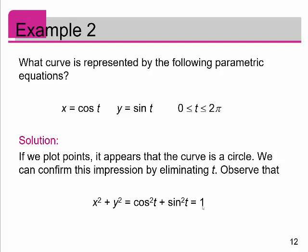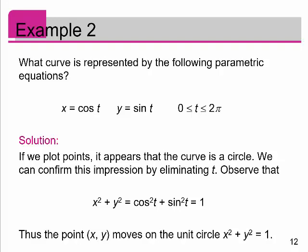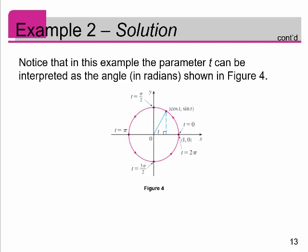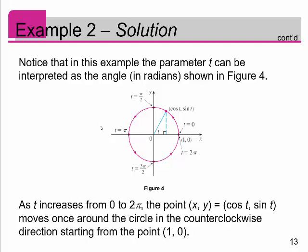Thus the point x, y moves on the unit circle. Notice that in this example the parameter t can be interpreted as the angle in radians. So if you have t equal to 0, pi over 2, pi, 3 pi over 2, and 2 pi, this particle moving along the circle would move counterclockwise. That was a quick introduction to parametric equations, and we'll move on in the coming sections to talk about the calculus related to parametric equations.